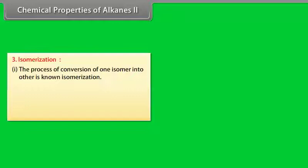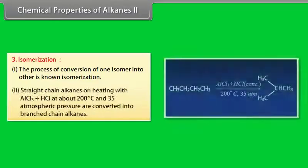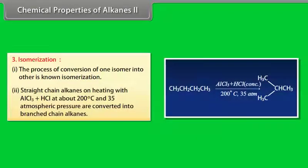2. Straight chain alkanes are heated with AlCl3 + HCl at about 200 degree centigrade and 35 atmospheric pressure and are converted into branched chain alkanes.